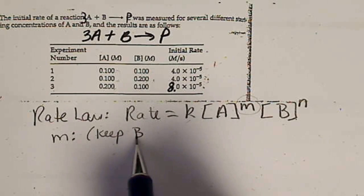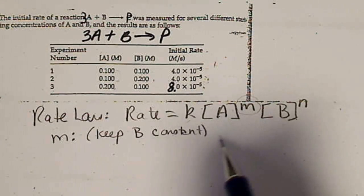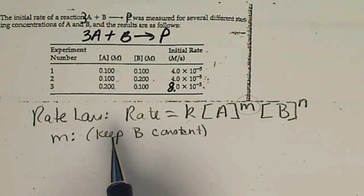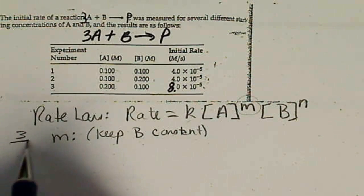So we have to keep B constant, and let reactant A vary. So if we look at that, that means we're going to use experiment 3 to 1.